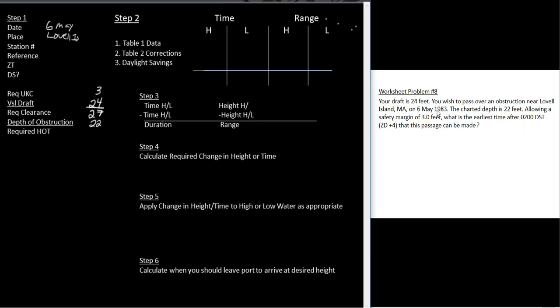If I'm required to have 27 feet and I'm passing over a rock that's at 22 feet, I can't pass over that rock at low tide. There's only 22 feet. I'll be 5 feet short. So what do I need the tide to be at? I'm going to take 22 and subtract it from 27. I'm going to get 5.